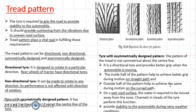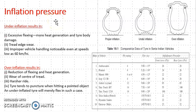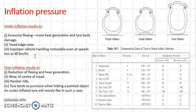Now we will see inflation pressure — it is very important. An example shows inside front tyre pressure and outside front tyre pressure. The inflation pressure should be according to the manufacturer's catalogue. If there is excessive inflation, more heat is generated and there is damage to the tyre. The tread edge wear varies more, and even at 60 km/h low speed, improper handling is noticeable.